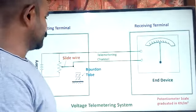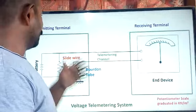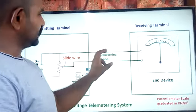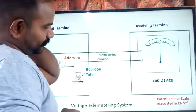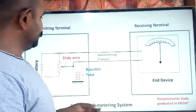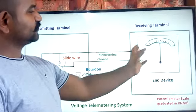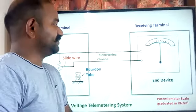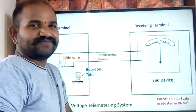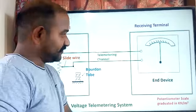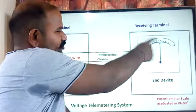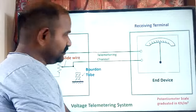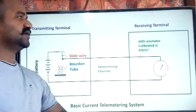In the voltage telemetering system, we are sending the information from the transmitter to the receiver in terms of voltage — the electrical signal used for transmission is the voltage. At the destination it receives the voltage information but displays the information in terms of pressure. We tune the potentiometer to display the value in terms of pressure.